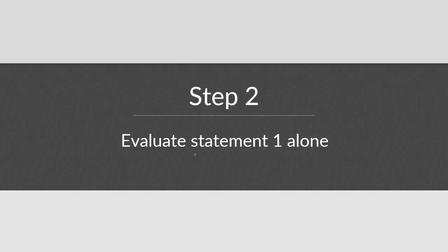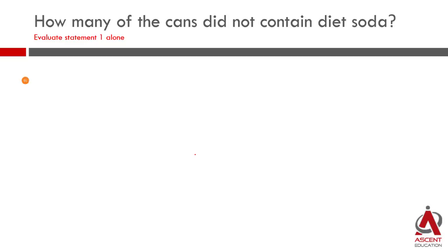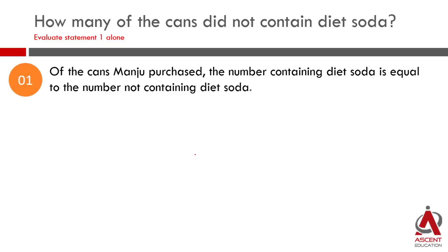Let's evaluate Statement 1. When we are evaluating Statement 1, we will evaluate only Statement 1 — we are not going to look at Statement 2 at all. Statement 1 says: of the cans Manju purchased, the number containing diet soda is equal to the number not containing diet soda. What does it mean?